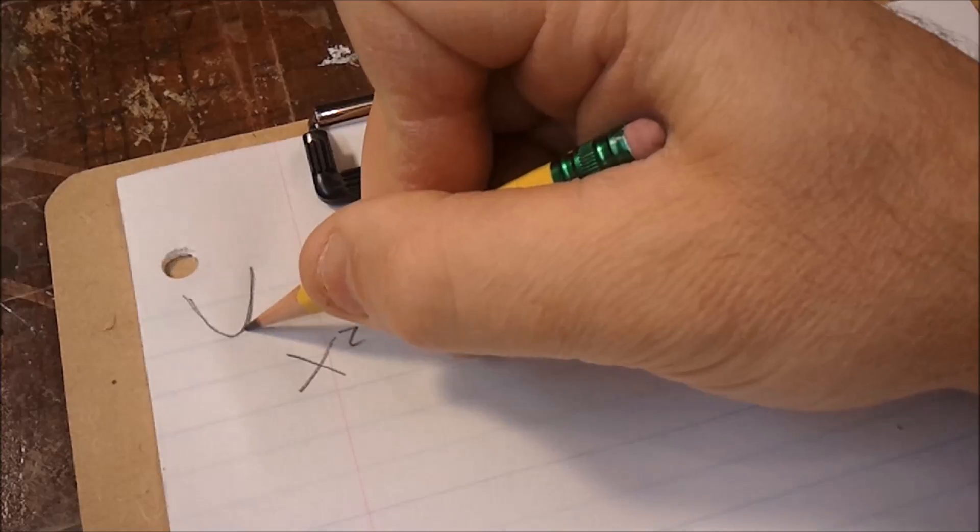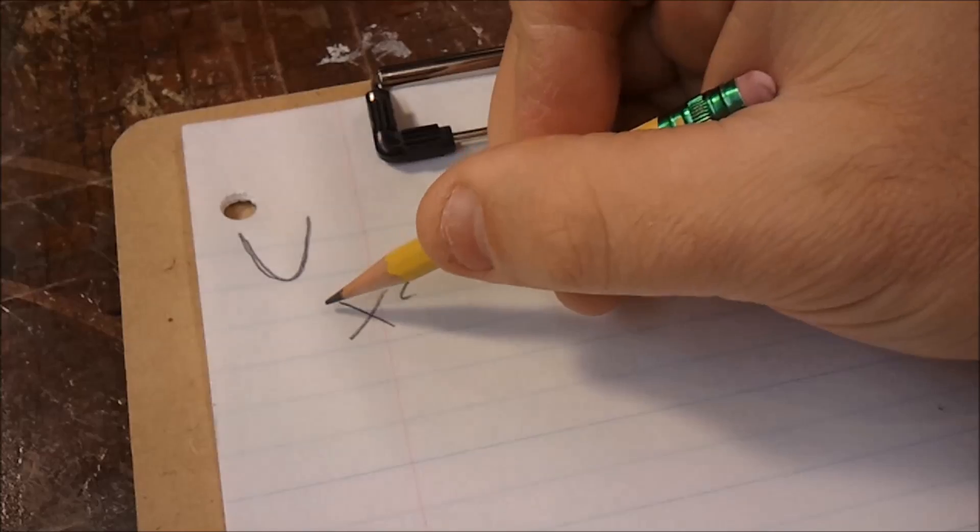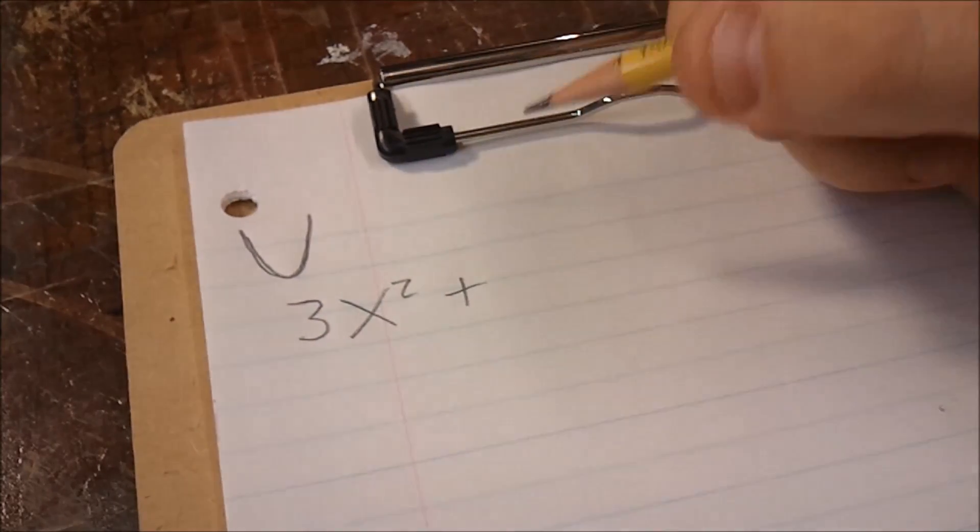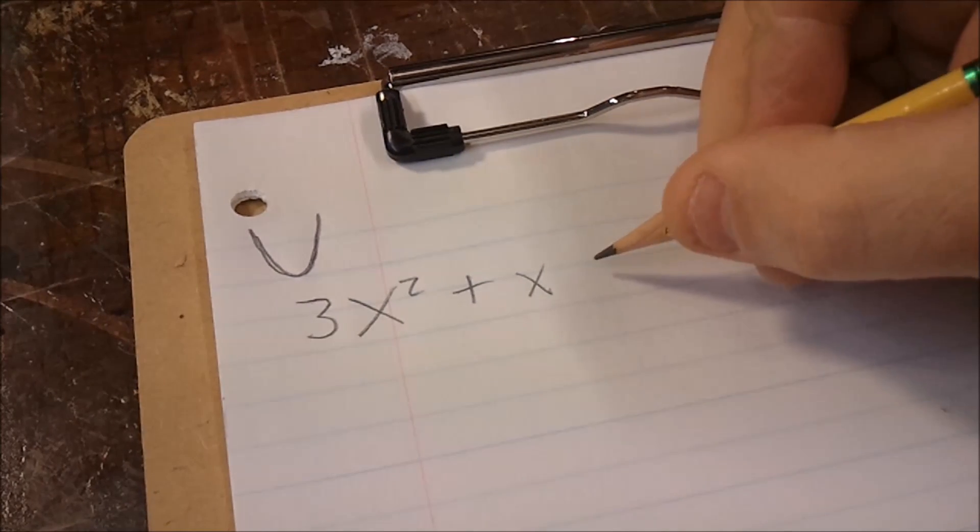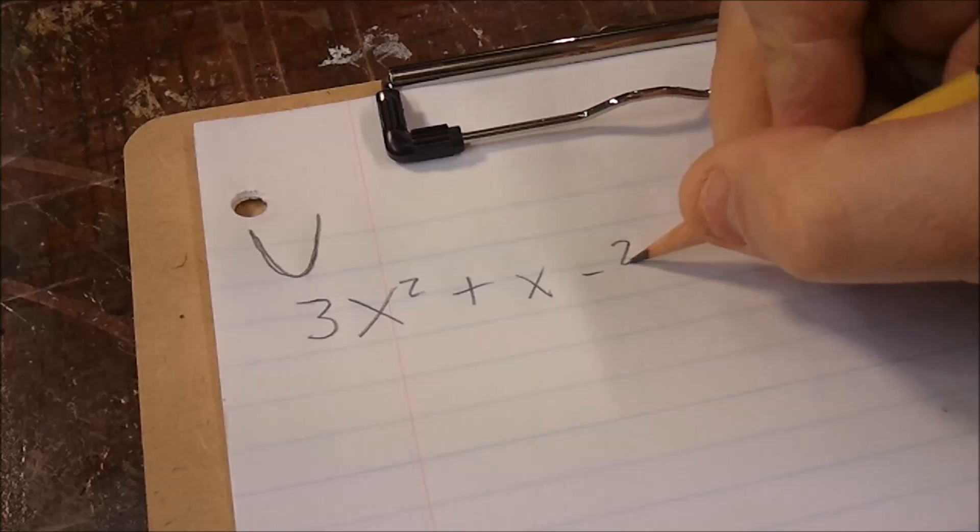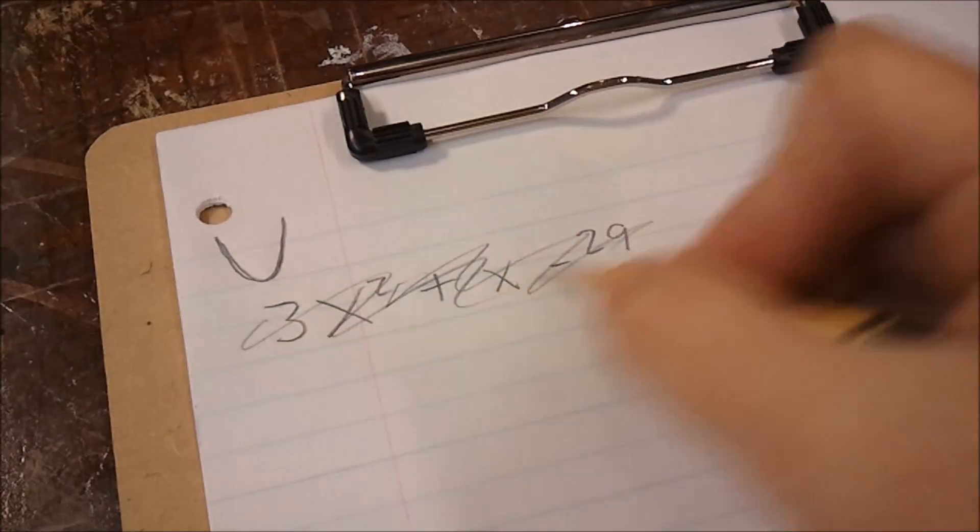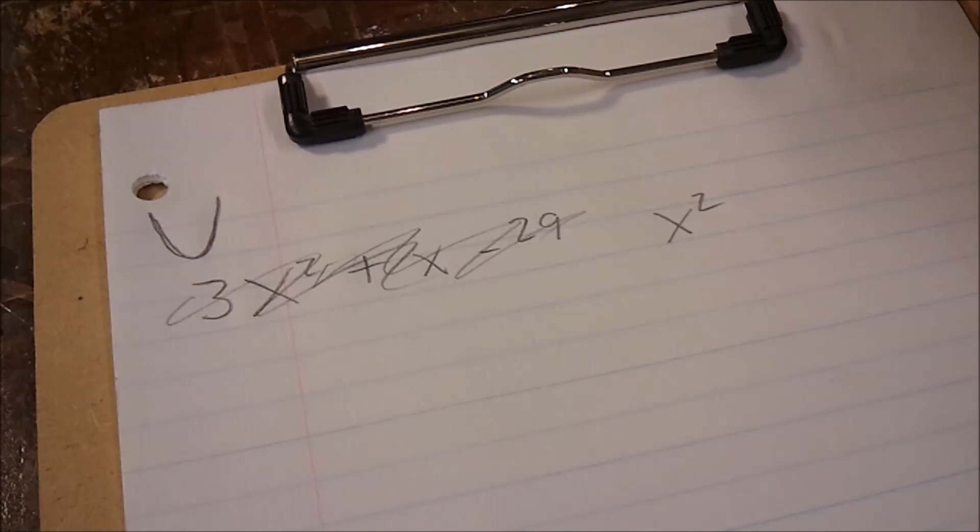And a parabola is this u-shaped thing that you've seen all throughout your life. It doesn't matter if there's something in front of the x squared, or if a different x is added to it, or if something else is taken away from it. All that matters is that if there's an x squared, there's a parabola somewhere close by.